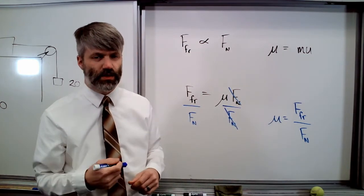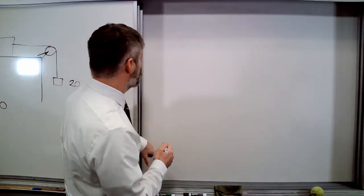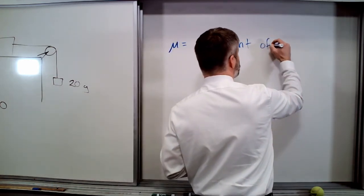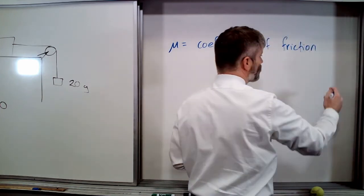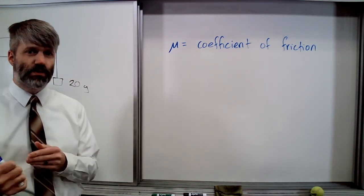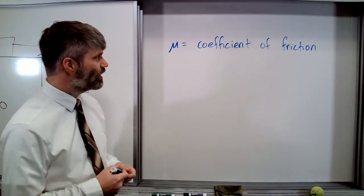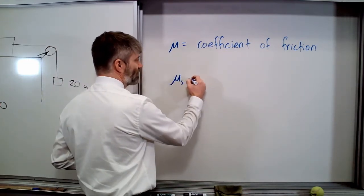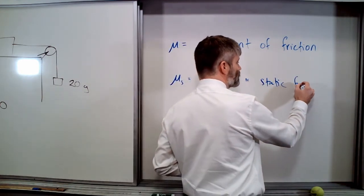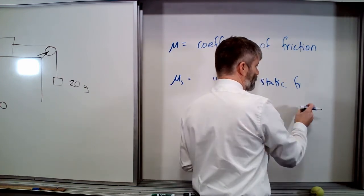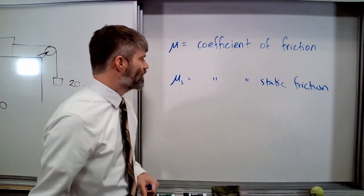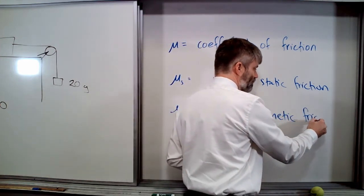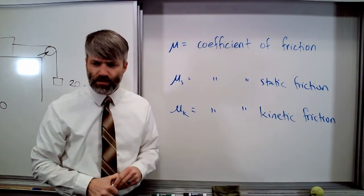So, this value here, it's this ratio, and we have a special name for that. It's called the coefficient of friction. Mu is the coefficient of friction. Now, just like we said, there are two types of friction. There is static friction, and there is kinetic friction. There are also two kinds of coefficients of friction. So, we'll have one that we'll call mu s, which is the coefficient of static friction. And then there also is mu k, which is the coefficient of kinetic friction.